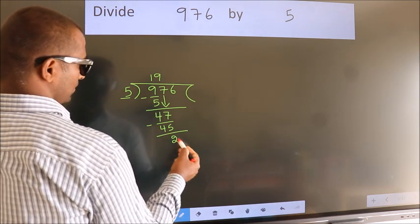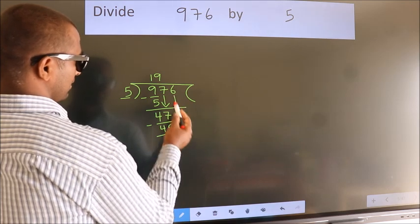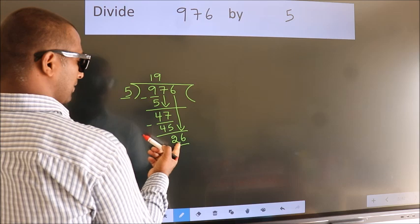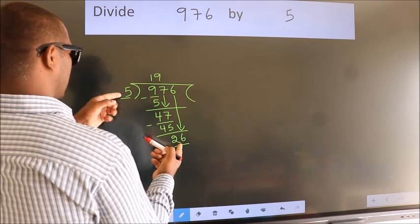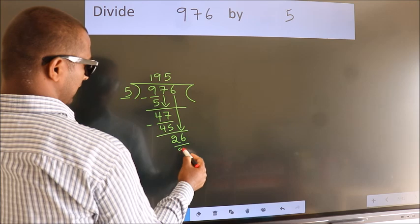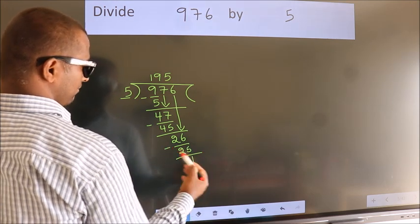After this, bring down the beside number, so 6 down. So 26. A number close to 26 in the 5 table is 5 fives 25. Now we subtract, we get 1.